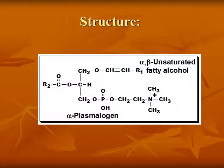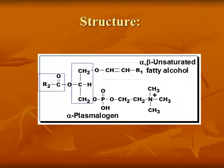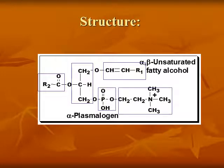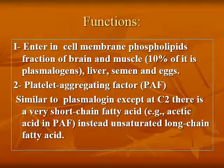Plasmalogen: structure of plasmalogen consists of glycerol as alcohol, polyunsaturated fatty acid, unsaturated fatty alcohol, phosphoric acid, and choline. Functions of plasmalogen: it enters the cell membrane phospholipid structure of brain, muscle, liver, semen, and eggs. It also enters in the formation of platelet aggregating factor, which is similar to plasmalogen except at carbon 2, where there is a very short-chain fatty acid such as acetic acid, in place of an unsaturated long-chain fatty acid.